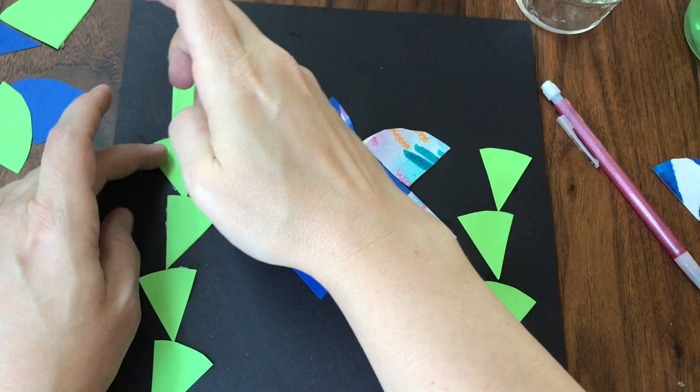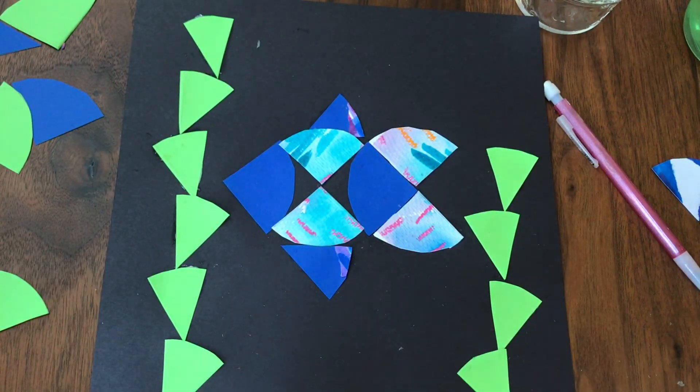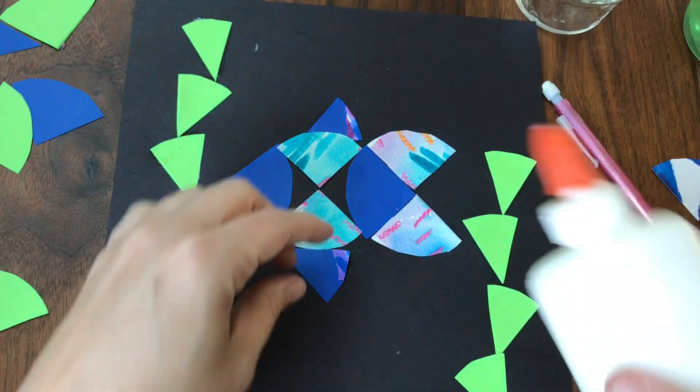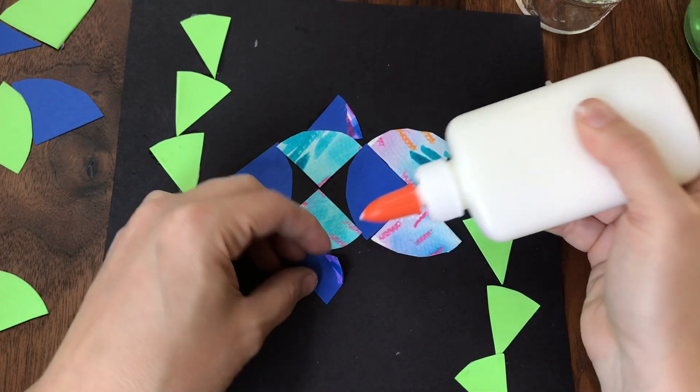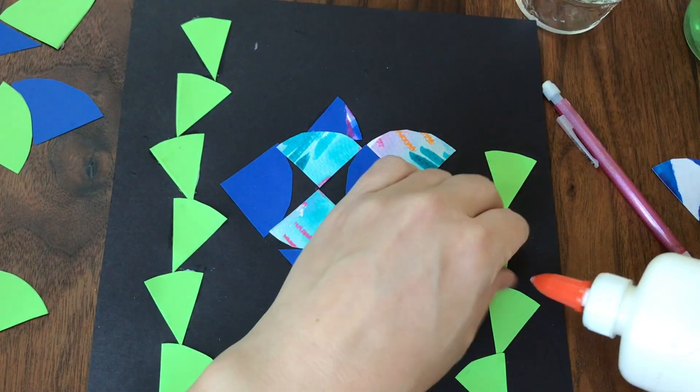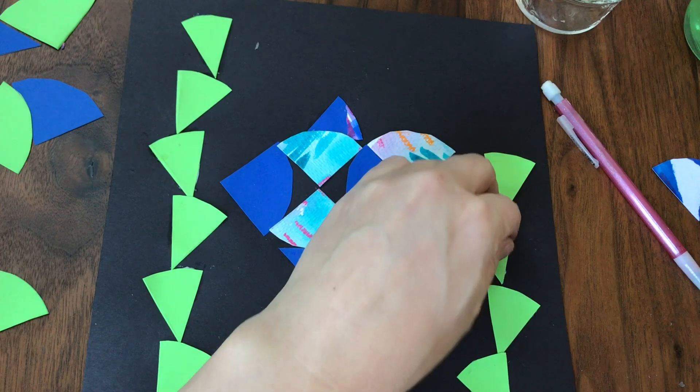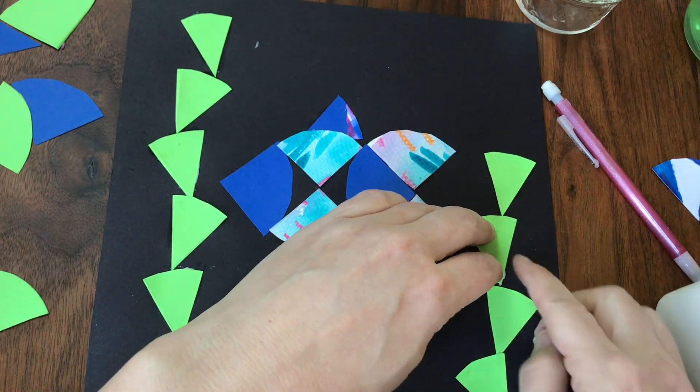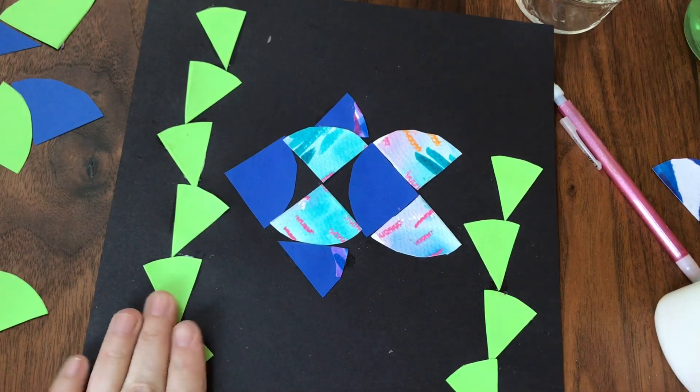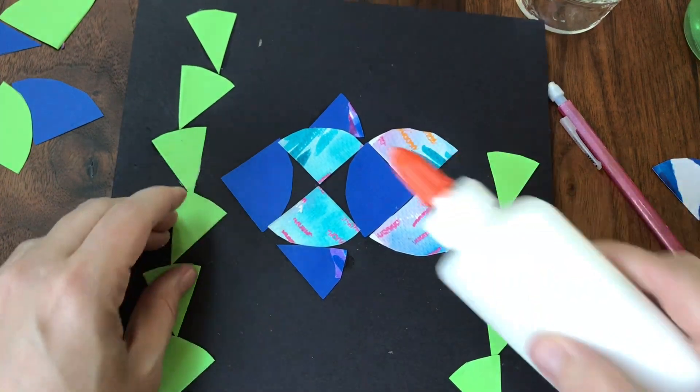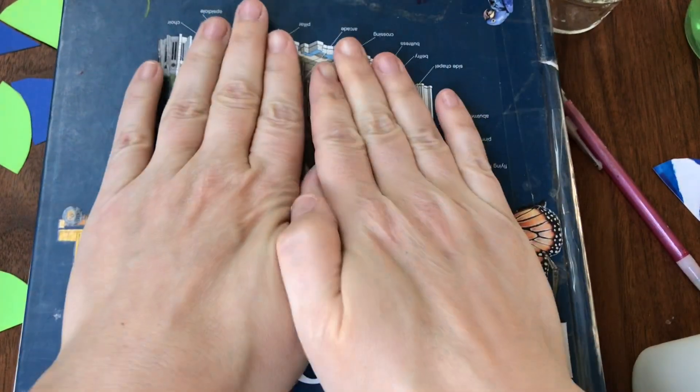When you are finished gluing all of your pieces, try and clean up any wet glue that is sticking out and then sneak some glue or glue stick under those edges, under those corners. Glue stick works great for this project as well as white Elmer's glue. I'm making sure no pieces are lifting up and away from the paper. And then I can even place a dictionary right on top for it to dry.